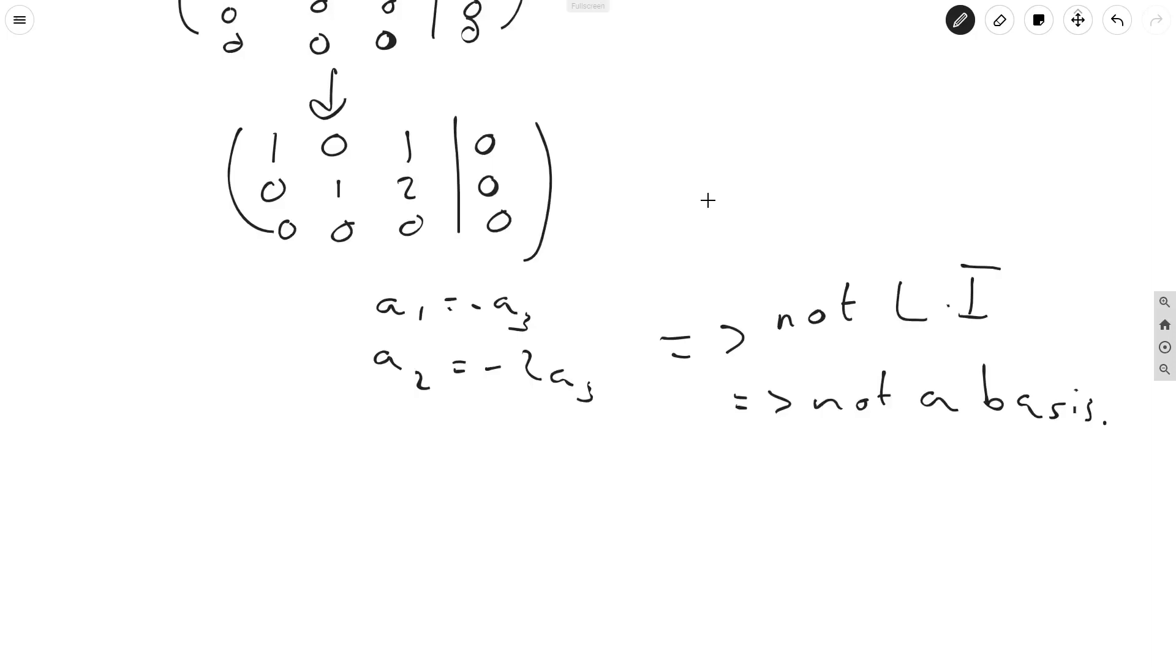So we get non-zero solutions, because we have solutions for any number a3. So we choose a number a3, and then this formula tells us how to get a1 and a2 to get a family of solutions. So since these vectors are not linearly independent, overall it's not a basis, because it's failed the first condition that they can't be linearly dependent.